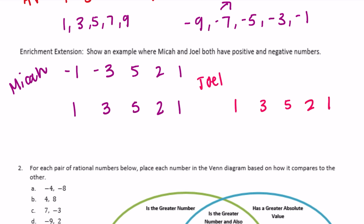So Joel could have — Micah had negative 1, so Joel's going to have positive 1. Micah had negative 3, so Joel's going to have positive 3. Micah had positive 5, so Joel can have negative 5. Instead of 2, let's do negative 2, and then negative 1. So they have different sets of positive and negative numbers, but the absolute values are the same.